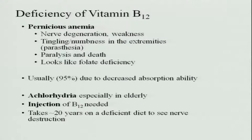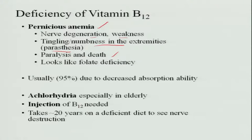Deficiency of vitamin B12 and pernicious anemia cause nerve degeneration and weakness. Because it is involved with the nerves, you get a tingling sensation or numbness in the extremities of the body — the ends of the hands and toes — which is called paresthesia. It may also cause paralysis and death. Since the symptoms look similar to folate deficiency, generally both folic acid and B12 are supplemented together.